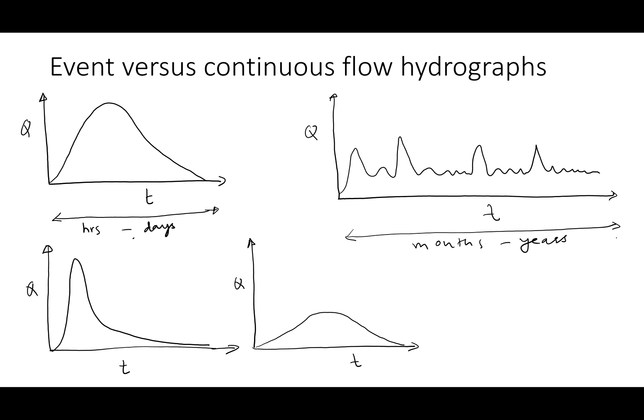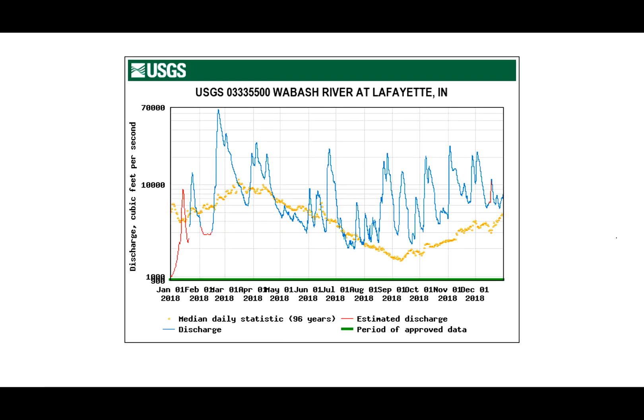You can have a continuous hydrograph as long as you have the data to describe it. Depending on the stream and watershed size, a continuous hydrograph will also have different shapes or characteristics. What I have done here is plotted one year of data for the Wabash River at Lafayette — where we are at Purdue. The blue line is the actual measured discharge, or in this case estimated discharge from stage data, and the yellow dots are the mean daily values using the last 96 years of data.